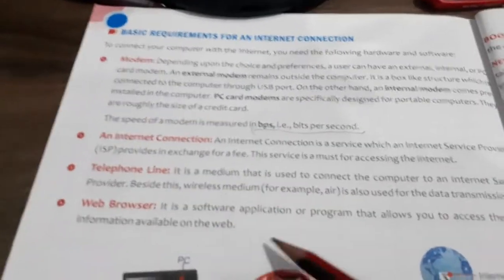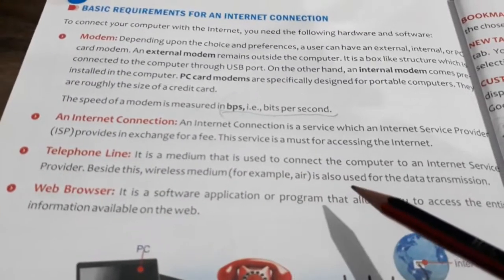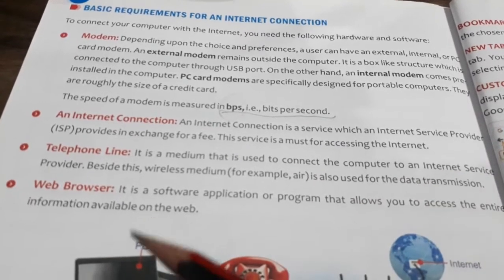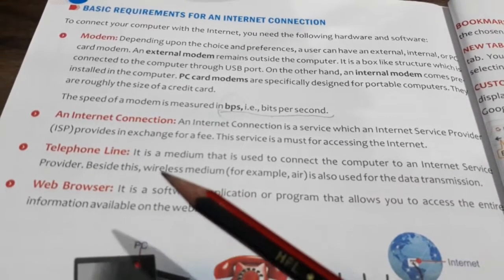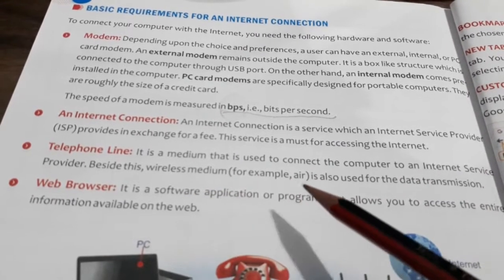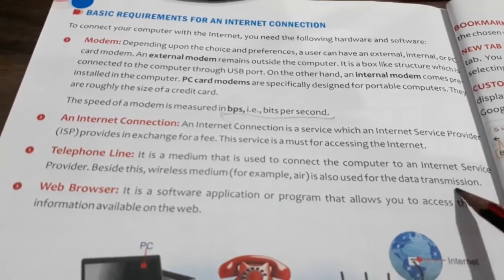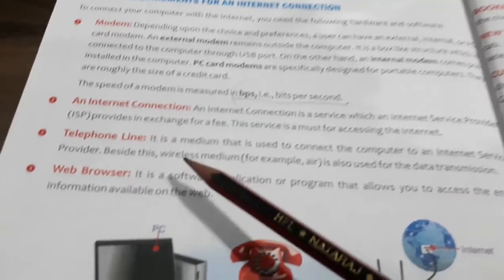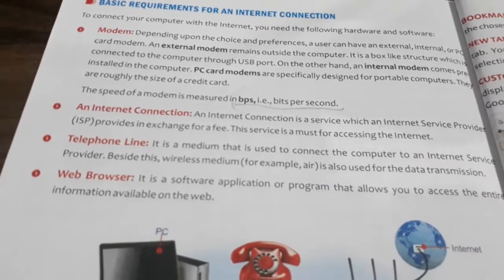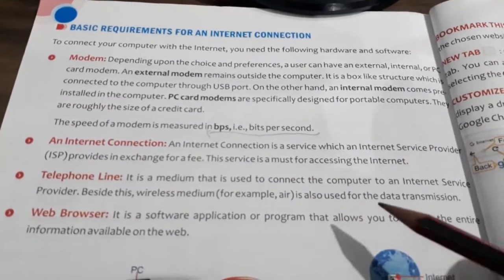Next is the telephone line. It is a medium that is used to connect the computer to an internet service provider. Besides this, wireless mediums — for example, air — are also used for data transmission.